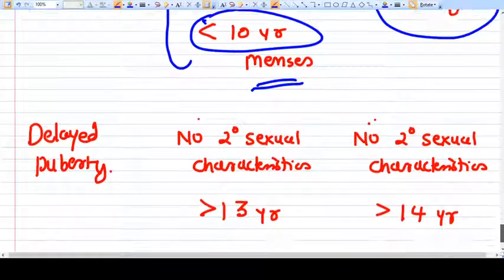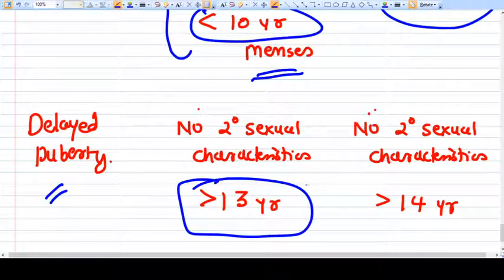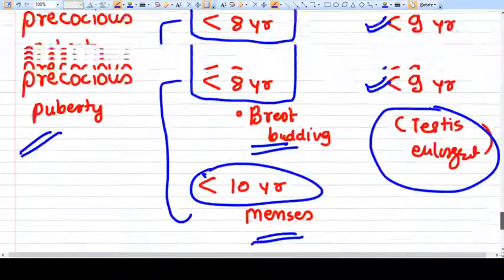What is delayed puberty? No secondary sexual characteristics like thelarche, menarche, or growth spurt even after 13 years of life is delayed puberty. No secondary sexual characteristics after 14 years is also called delayed puberty.